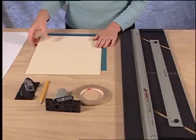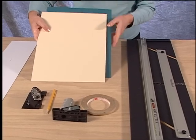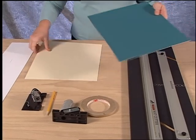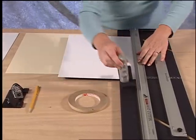To create a double mat, select two different colors of mat board, use the mat intended to be the liner or second mat, and use a straight cutter to slightly downsize it.